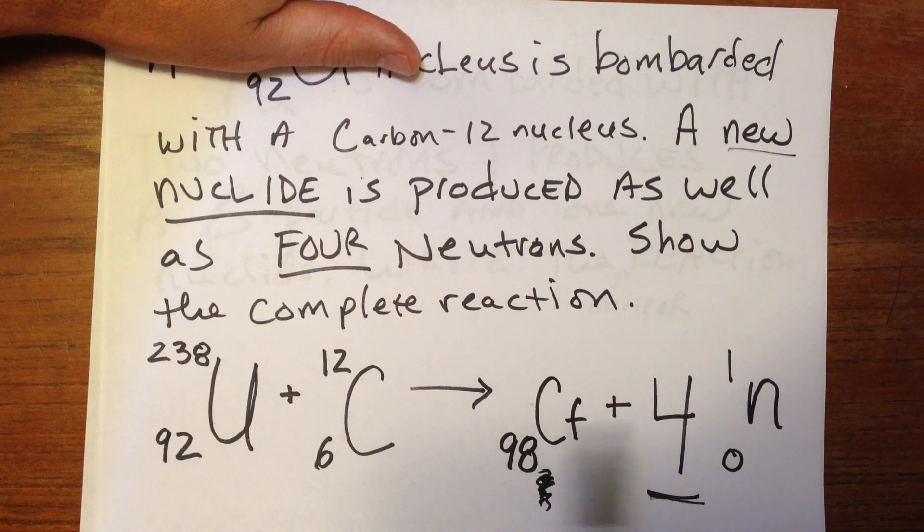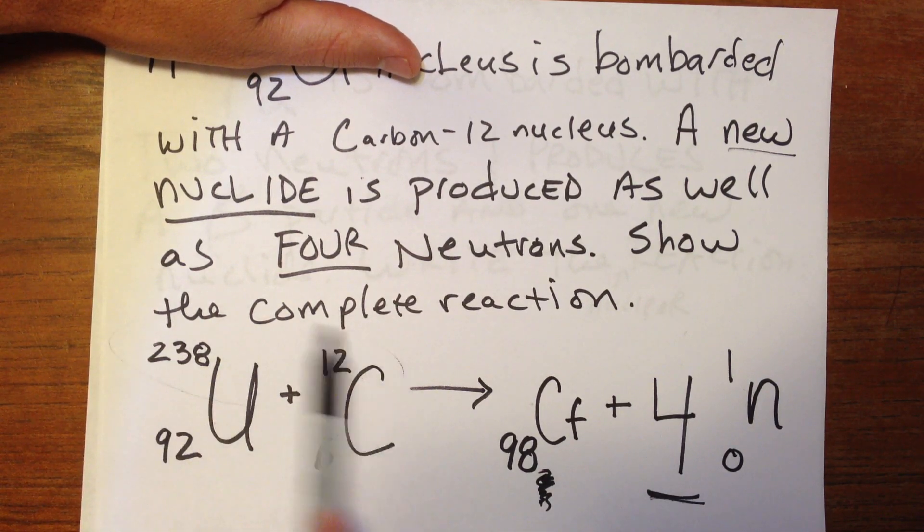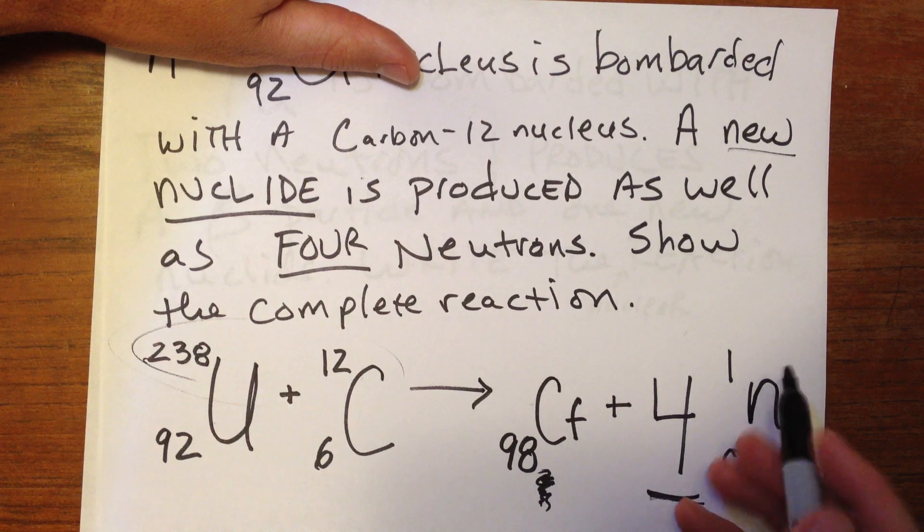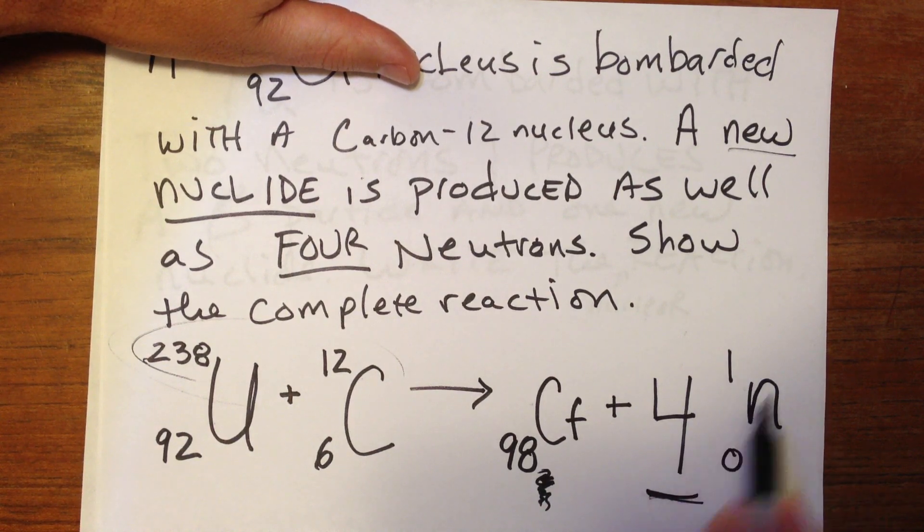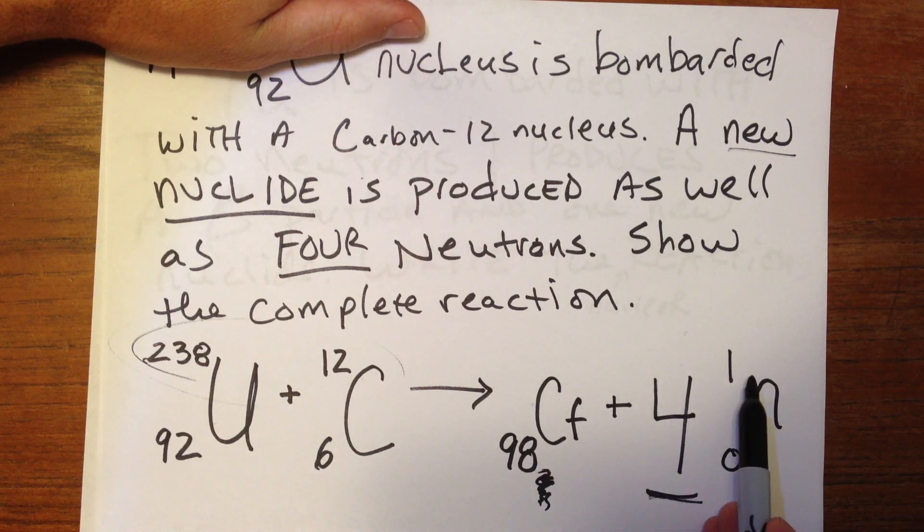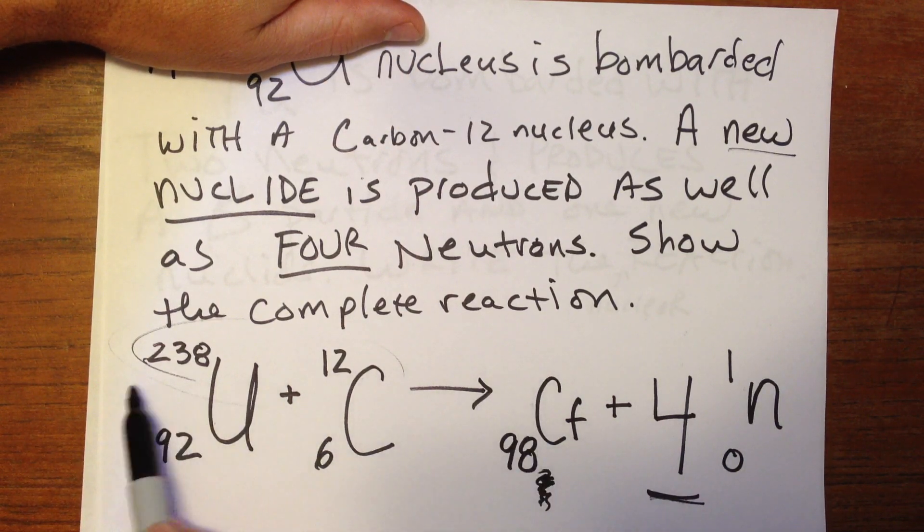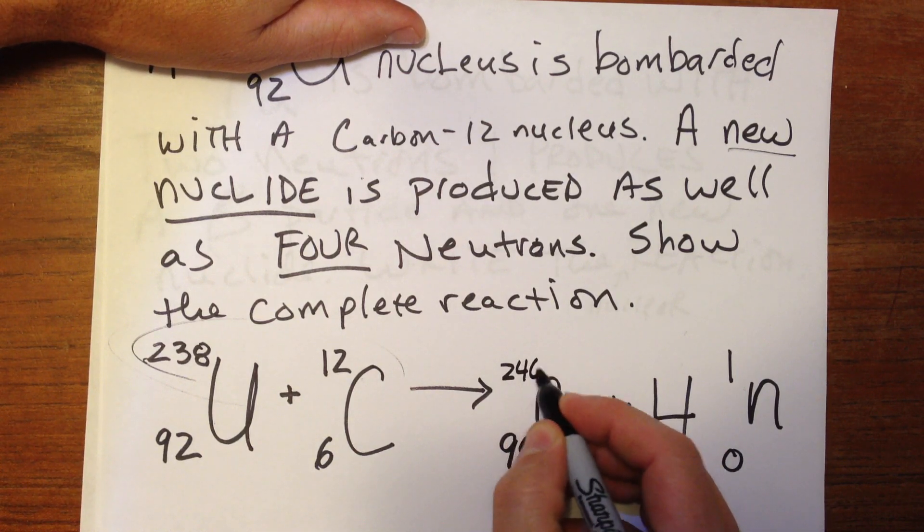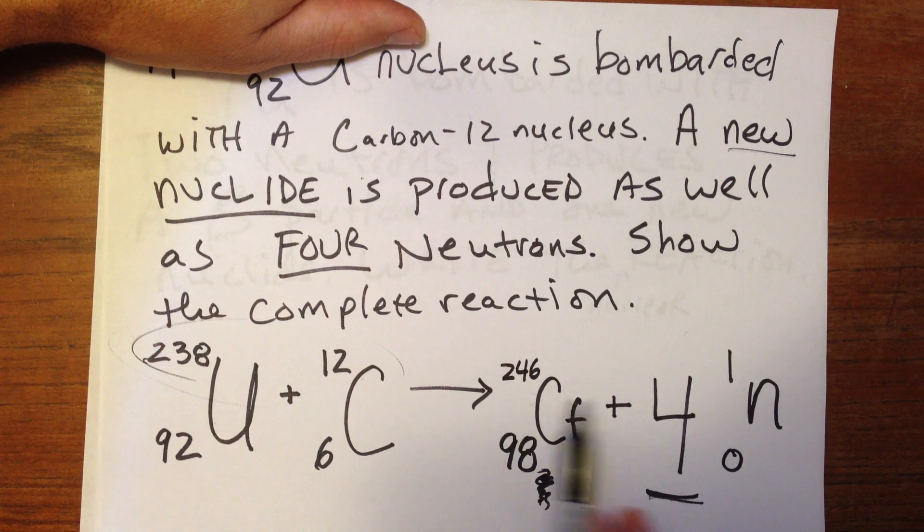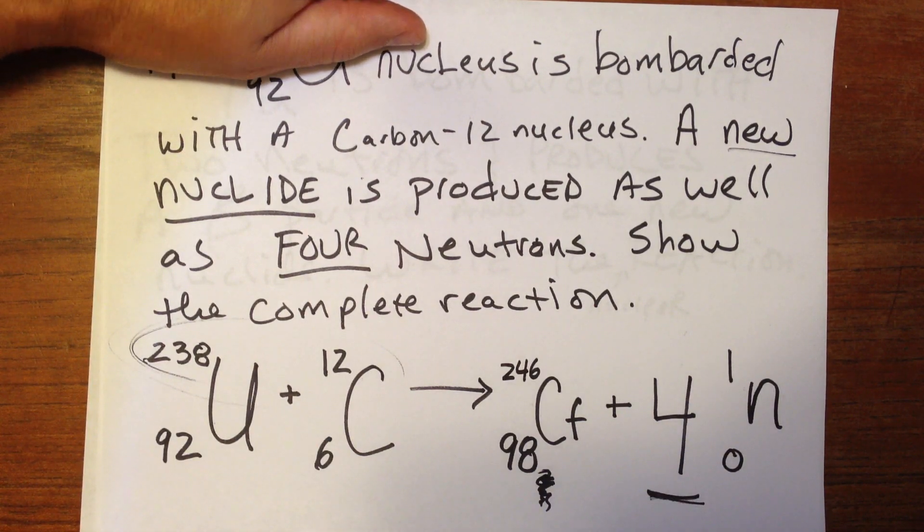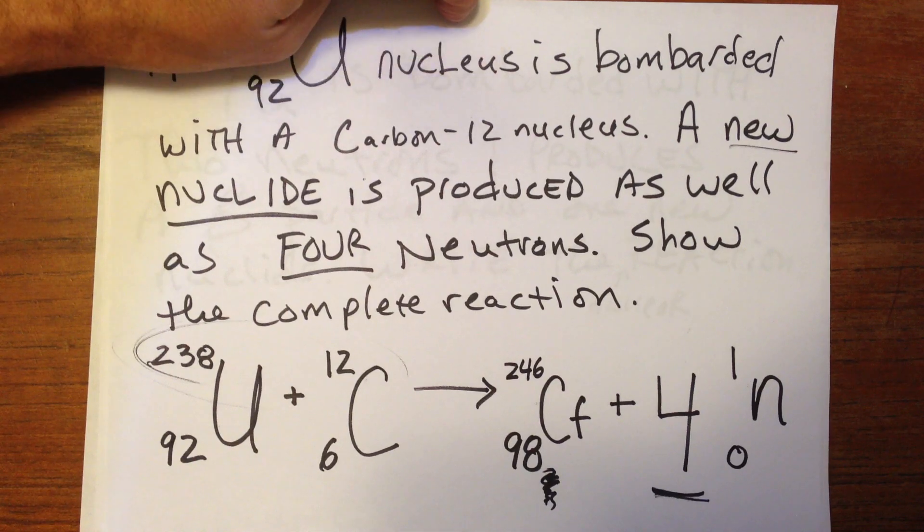And again, we look at the totals over here. The mass numbers here add up to 250. So over here, this has to be 250. But what have we got over here? Well, we've got only one, but we have four of them. Four ones is four. So four plus what equals 250. Well, I would guess 246. 246 plus four is 250. So this adds up to 250. This adds up to 250. And that's how we know how that reaction goes.